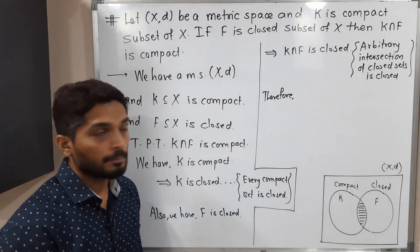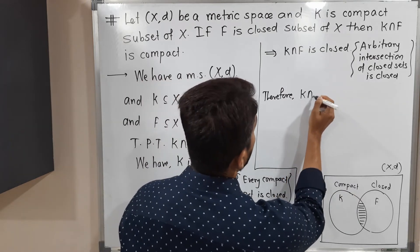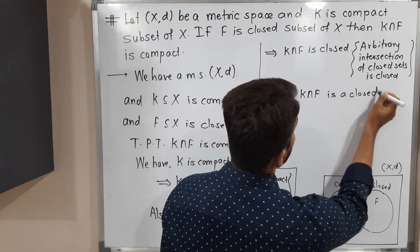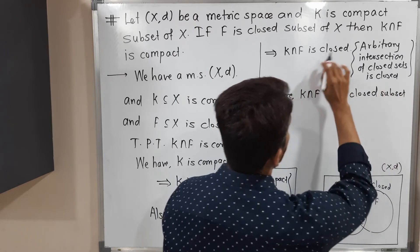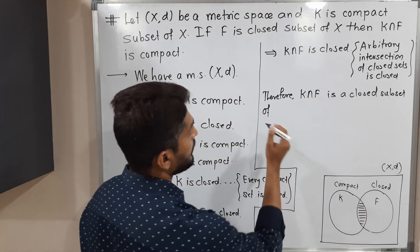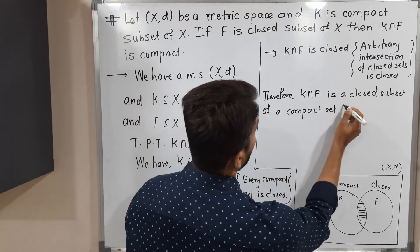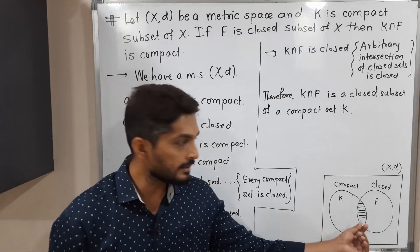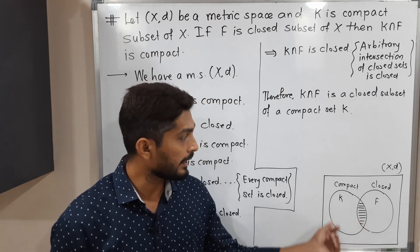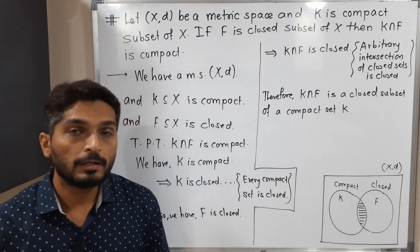Therefore K intersection F is a closed subset of K. As you can easily see in the diagram, K intersection F lies inside K. We have proved it is closed, and K is compact — it is given. So K intersection F is a closed subset of the compact set K.